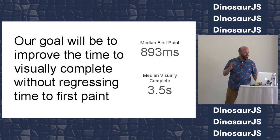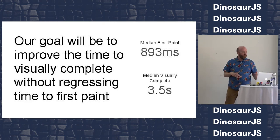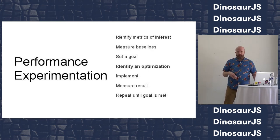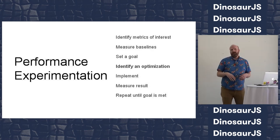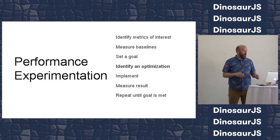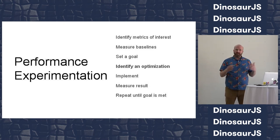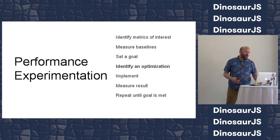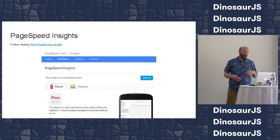Here are some numbers from the baselines. Next up we're going to identify an optimization. This is the really tricky bit because there are so many different things you can do to make websites faster — there are a bazillion moving parts. Fortunately, there are some really good tools out there.